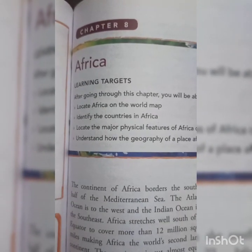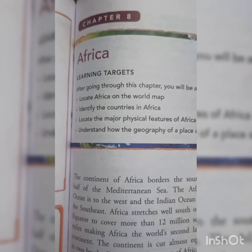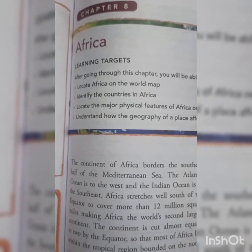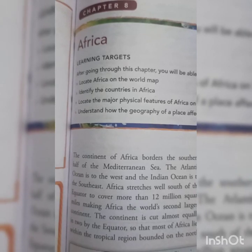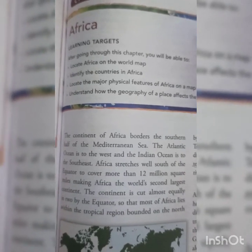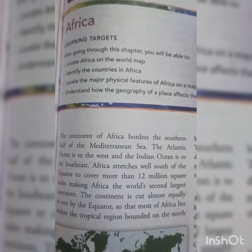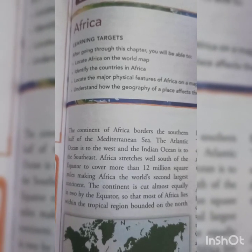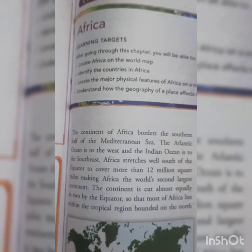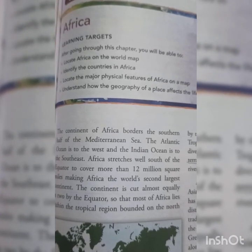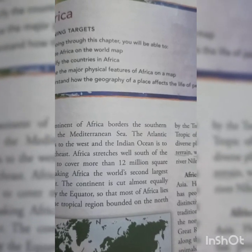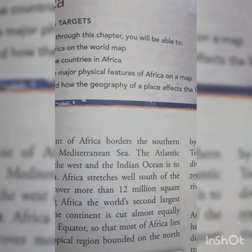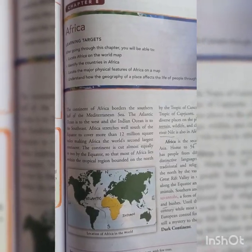Hello dear students. In this video we are going to start with Chapter 8, that is Africa. This chapter is one of the chapters of the final term syllabus. In this chapter we are going to study about the location, boundaries, political and physical features of Africa. We are going to locate Africa on the world map, then study about its political and physical features with respect to the map. Map work of this continent is very important. We are also going to study about the political divisions, countries and capitals of Africa, as well as mountains, rivers, and deserts.